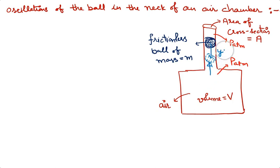As we displaced this ball by amount Y from its equilibrium position, the decrease in volume of the air chamber will be given by area of cross section into Y. Decrease in volume of air chamber will be given by A into Y, where Y represents displacement of the ball from its mean position.